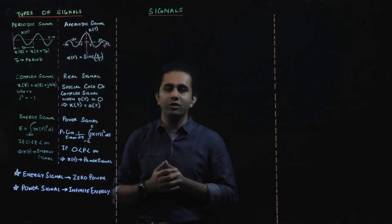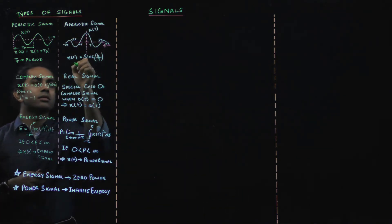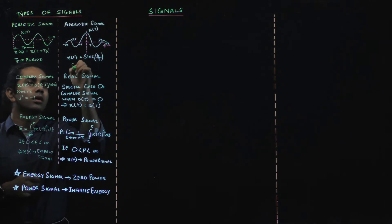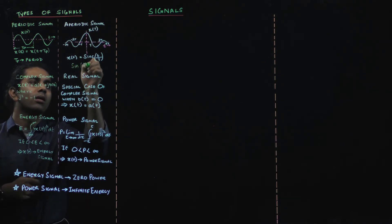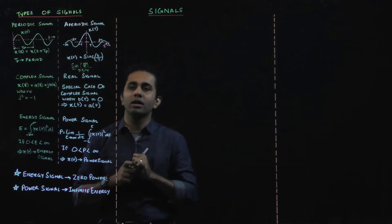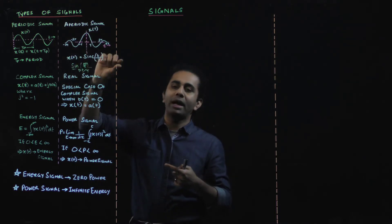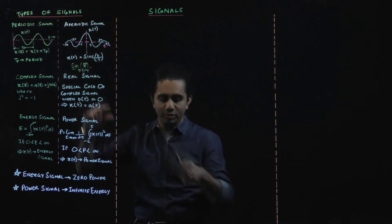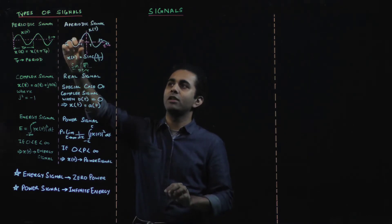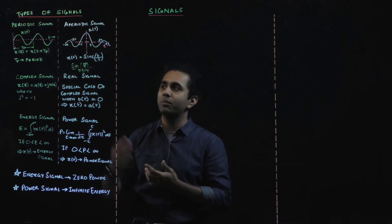The sinc function can be written such that as your time keeps increasing, the magnitude of your sine function keeps reducing. So this function effectively would not be repeating after any constant time period T, meaning we can say this is an aperiodic signal.